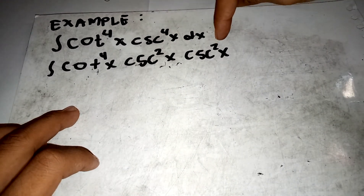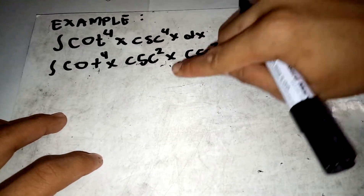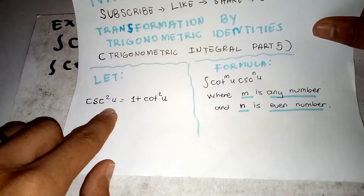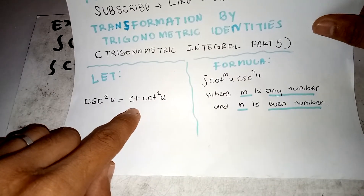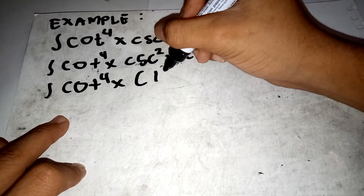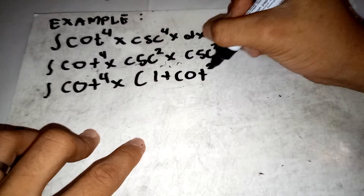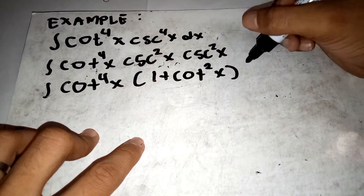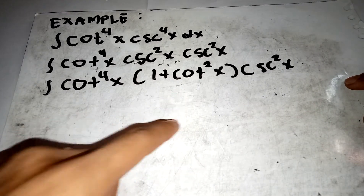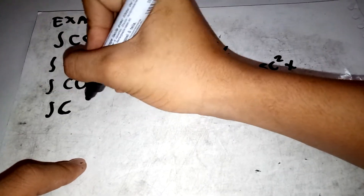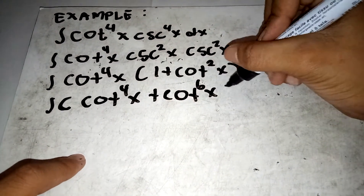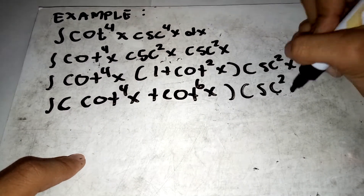When we multiply cosecant squared x by cosecant squared x, we get cosecant to the fourth x. Now we have a cosecant squared, so we can apply our rule: cosecant squared u transforms to 1 plus cotangent squared u. Copy cotangent to the fourth x, then apply the rule to get 1 plus cotangent squared x, then bring down the other cosecant squared x. Multiplying out gives cotangent to the fourth x plus cotangent to the sixth x, times cosecant squared x.